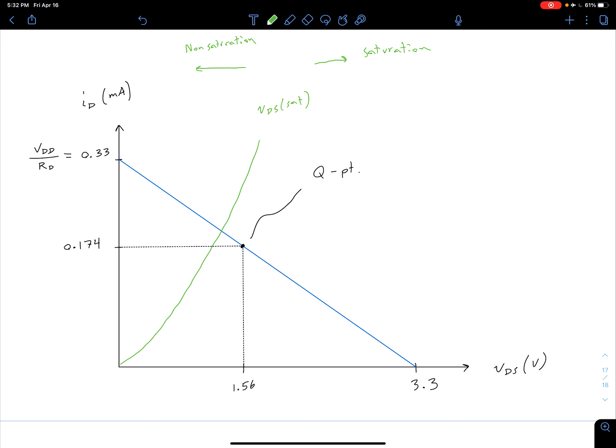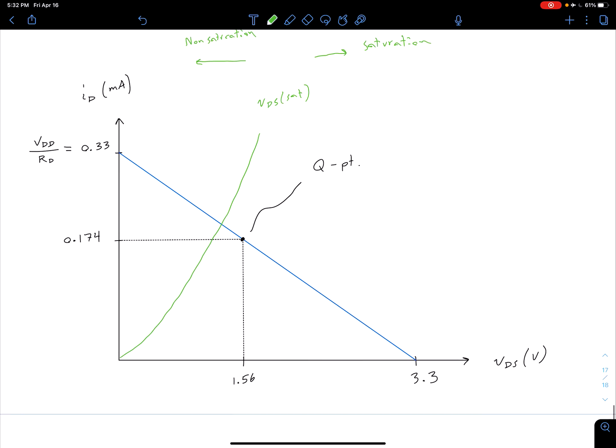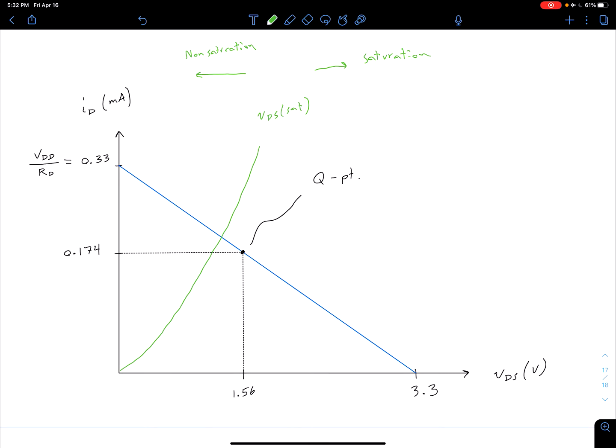And so for linear amplification, we've said we want to be in the saturation region. We can see our Q point is in the saturation region. So in that case, in terms of that, we are good. But we could be a little better. And so let's talk about how exactly we could improve this.